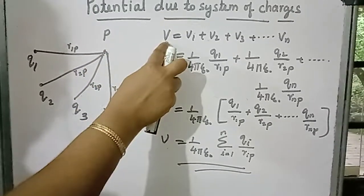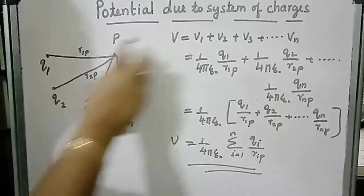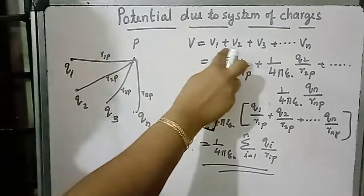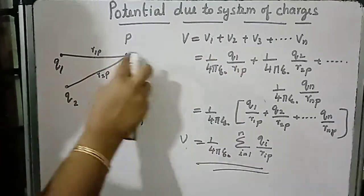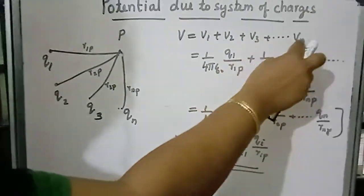Total potential at this point V equals V1, work done against Q1, plus V2, work done against Q2, plus V3, et cetera, up to Vn.